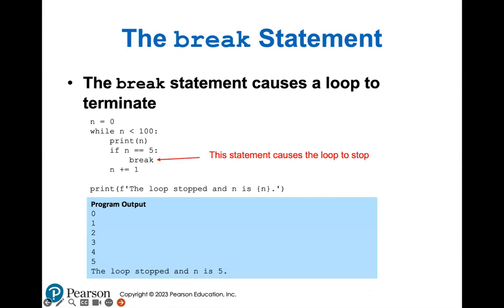Break is also important. The break statement will cause a loop to terminate. Once you reach a break statement - usually used with an if decision structure - your loop will stop. This is another way to prevent infinite loops. In this example, the break is used when n reaches five: once n reaches five, we break and print 'the loop stopped and n is five'.